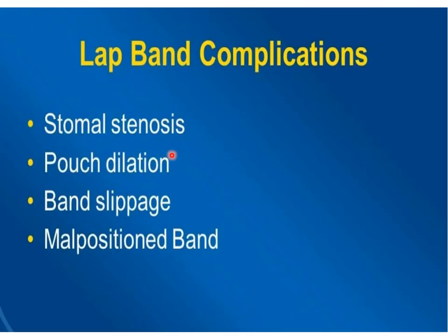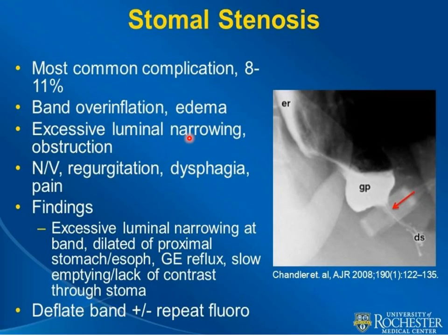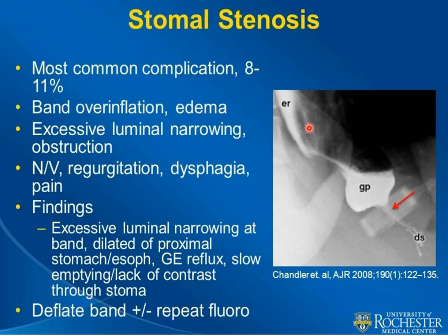The most common laparoscopic band complications are stoma stenosis, pouch dilatation, band slippage, and malpositioning. Stoma stenosis occurs in about 8 to 11% of cases, due to band overinflation or edema, causing excessive luminal narrowing and obstruction. Symptoms include nausea, vomiting, regurgitation, dysphagia, pain. Findings include excessive luminal narrowing at the band, dilated proximal esophagus and stomach, gastroesophageal reflux, and slow or absent passage of contrast through the stomach. Treatment is to deflate the band and repeat fluoroscopy.